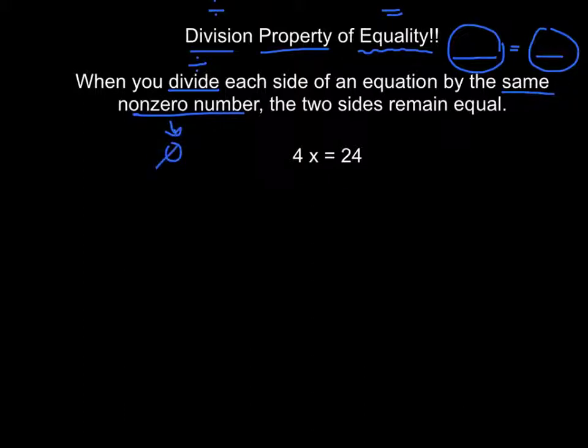Actually I should rewrite that. If we cannot, dividing by zero equals undefined, which is impossible. Then the two sides, each of these two sides, will remain equal. So here we go. We have 4x is equal to 24.